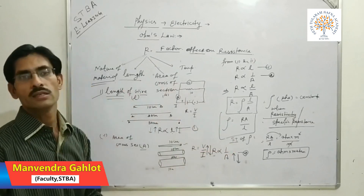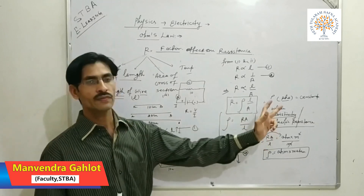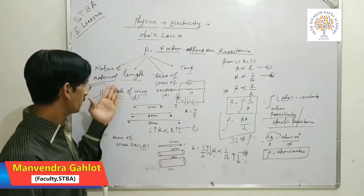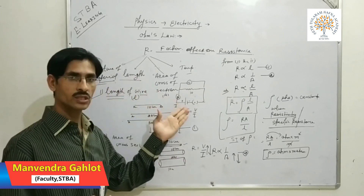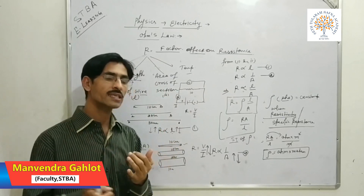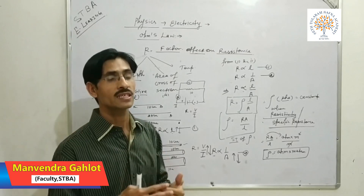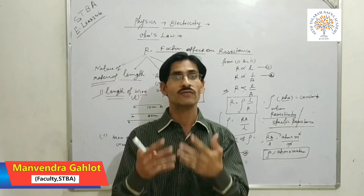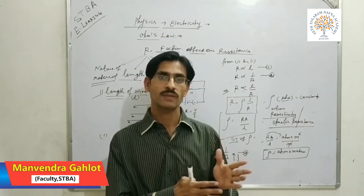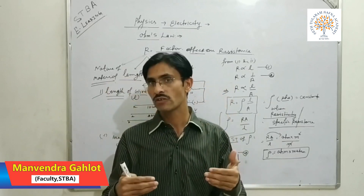Resistivity, also called specific resistance, does not depend on length, area of cross section, or temperature. It only depends on the nature of the material. For example, if you take three different wires made of copper, aluminum, and iron, they have three different natures of material, so they have different resistivity values. Resistivity depends only on the nature of material.